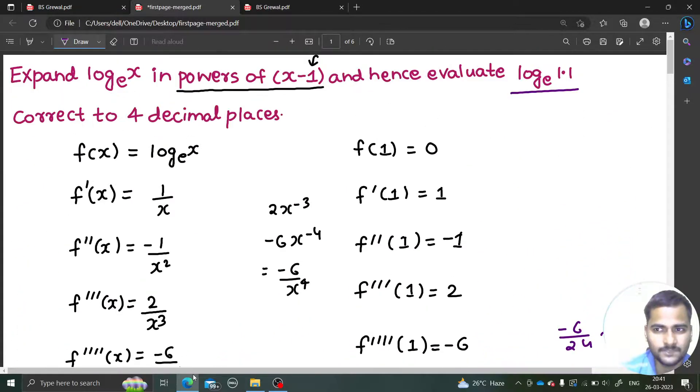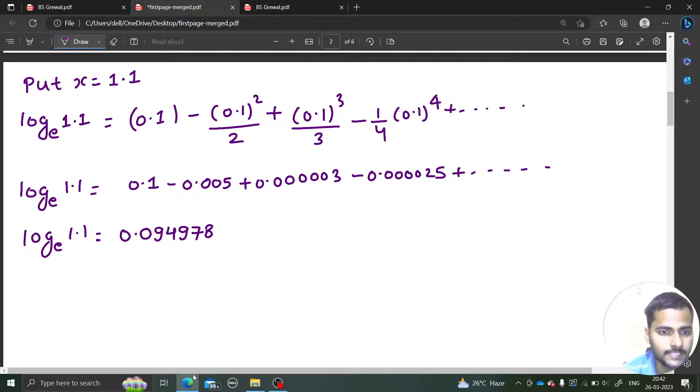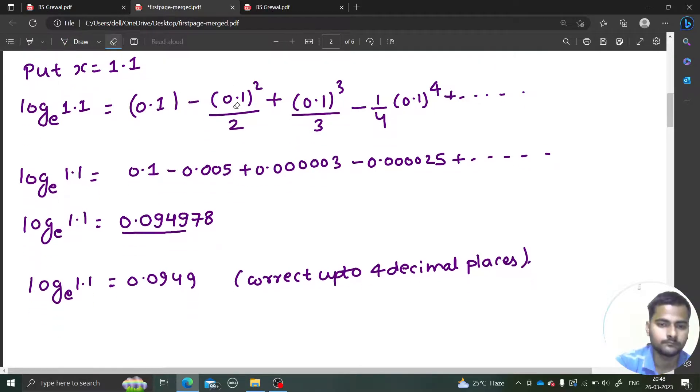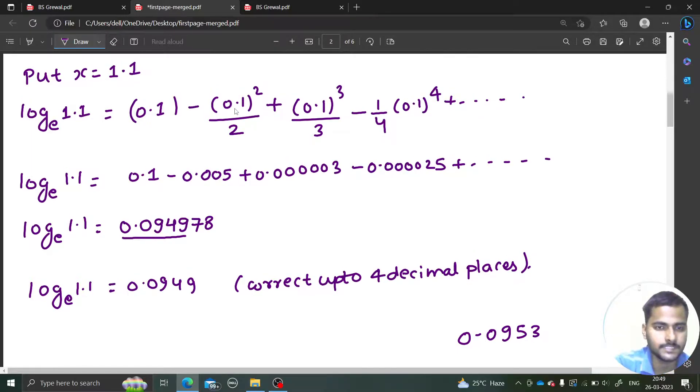They are asking to correct up to 4 decimal places. So I can write log 1.1 to the base e is 0.0949 correct up to 4 decimal places. It will be better if we check it once through calculator. ln 1.1 value is 0.0953. So I need to check my calculations once again.